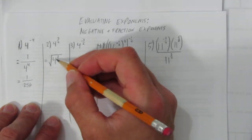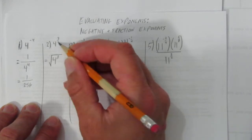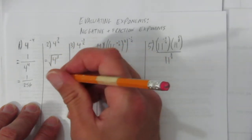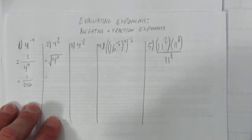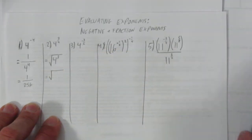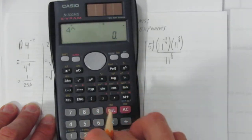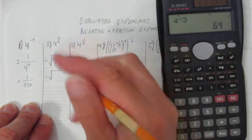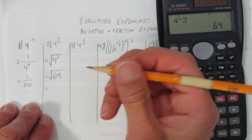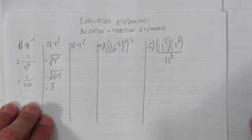So, 4 to the power of 3 because the top was a 3, and to the root of 2 or square root because the bottom was 2. We get the square root of 4 cubed. 4 to the power of 3 is 64. What's the square root of 64? The square root of 64 is 8. Another one done.